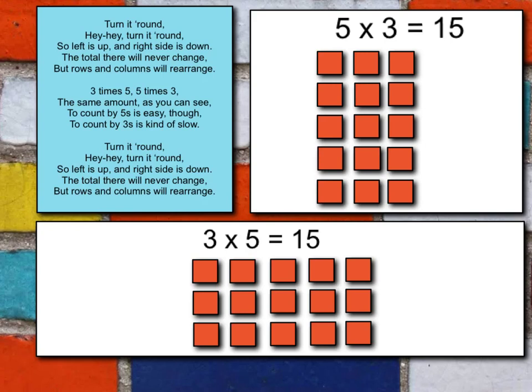Turn it around, hey turn it around. So left side is up and right side is down. The total there will never change, but rows and columns will rearrange. Three times five, five times three, the same amount as you can see. To count by fives is easy though, to count by threes is kind of slow. Turn it around, hey turn it around. The left side is up and right side is down. The total there will never change, but rows and columns will rearrange.